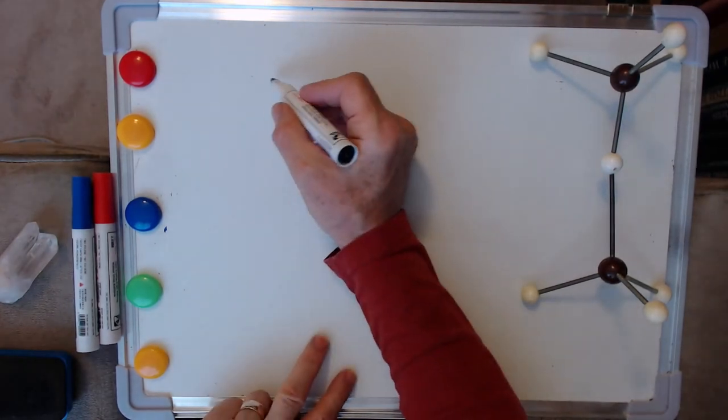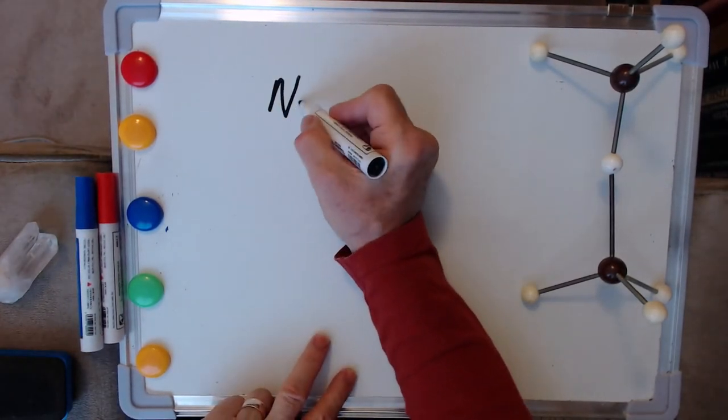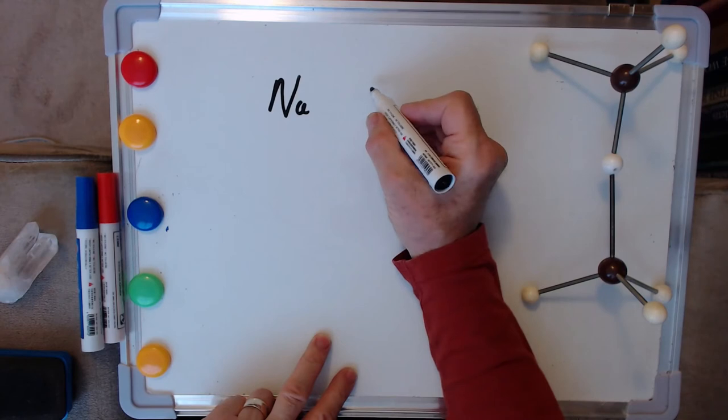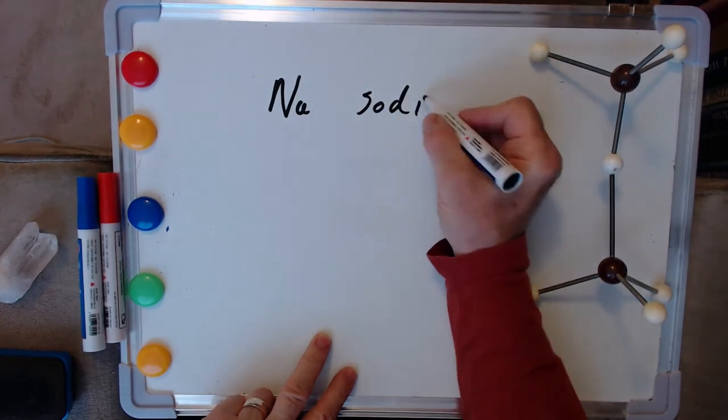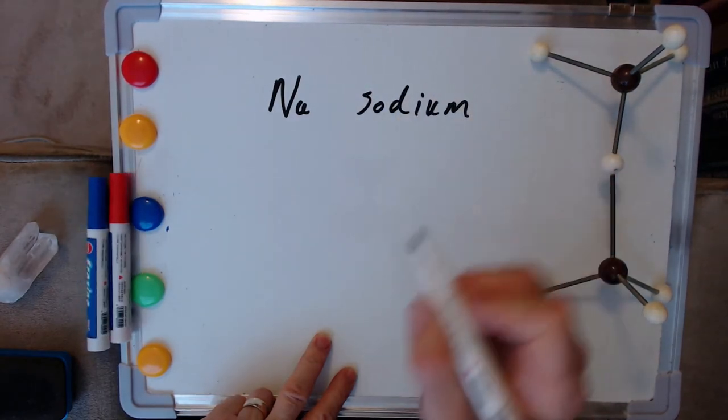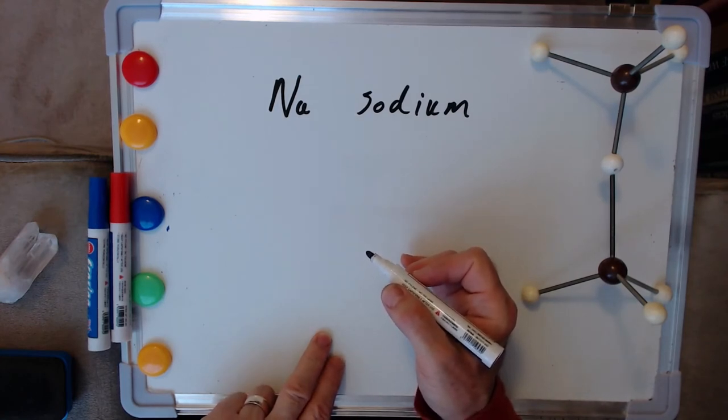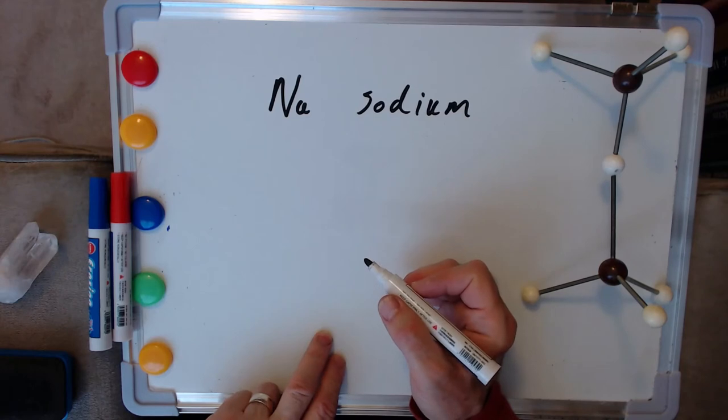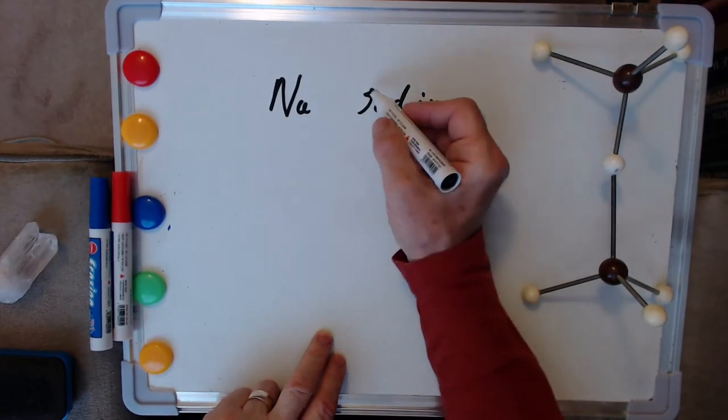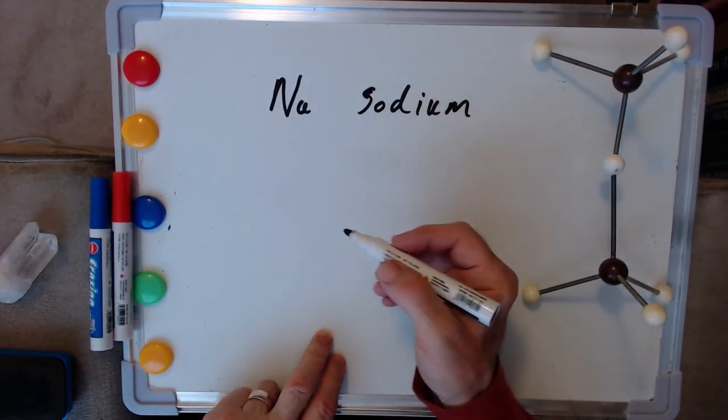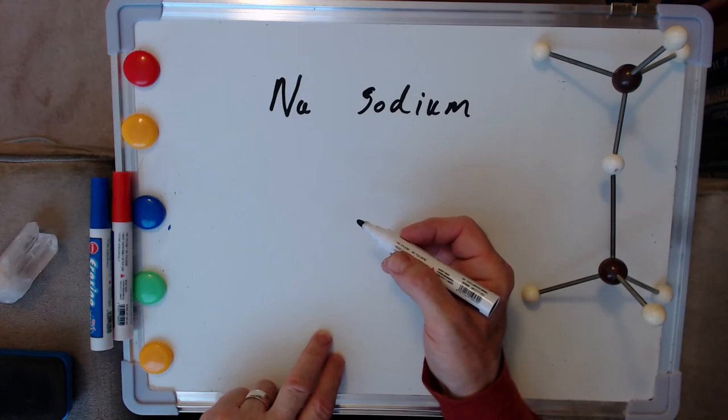But actually what they'd found by happenstance or design, nobody really knows, is that if you add atoms of sodium, then you can lower the melting temperature. And in fact you can lower it dramatically, down to just a few hundred degrees, and that was well within the scope of early furnaces.